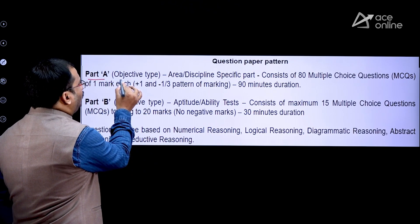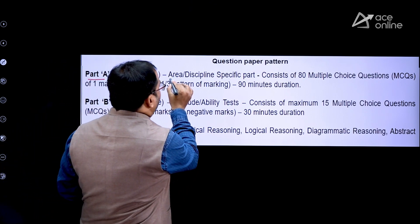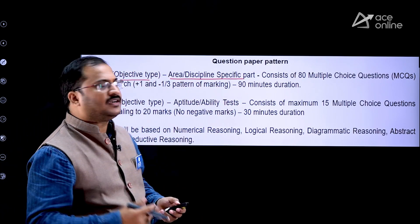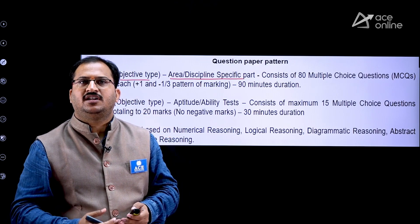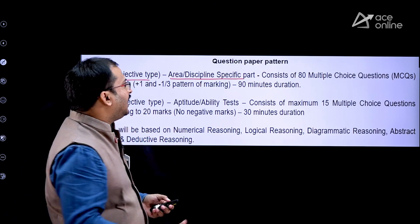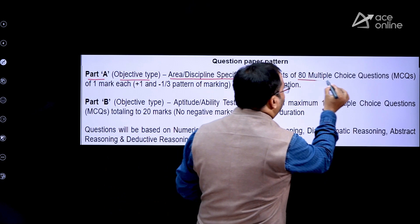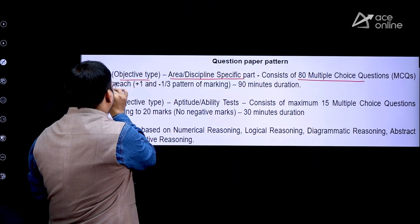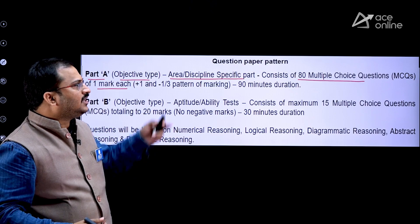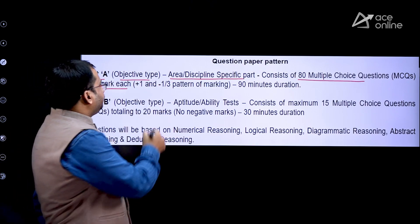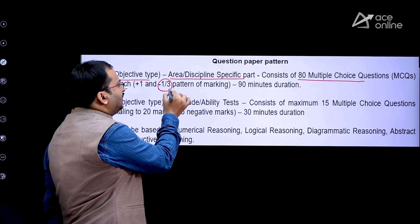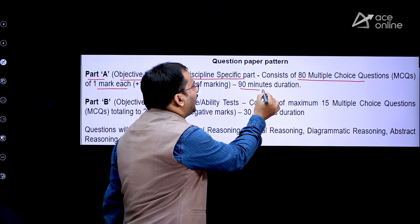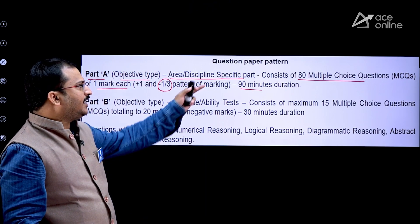Part A consists of objective-type questions with a discipline-specific area, meaning Mechanical Engineering related subjects. There are a total of 80 multiple choice questions, each carrying one mark, giving 80 marks total. There will be one-third negative marking, and the total duration for Part A is 90 minutes.